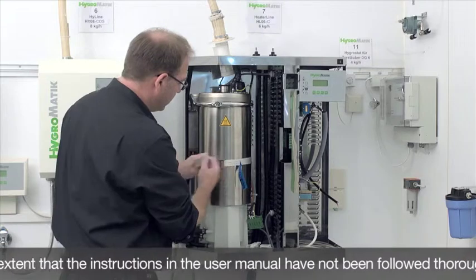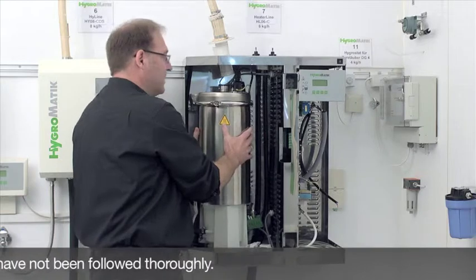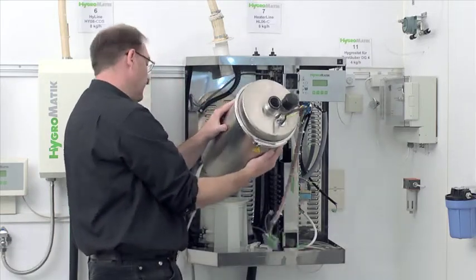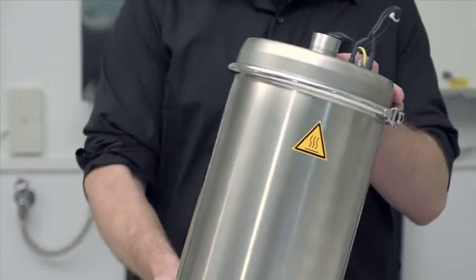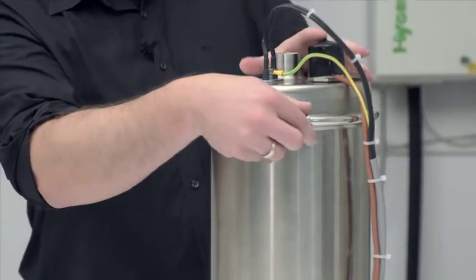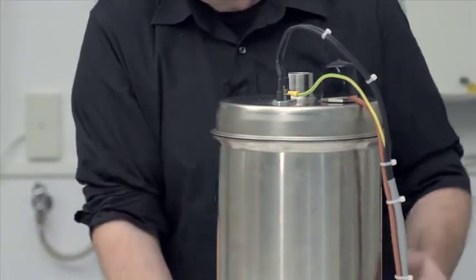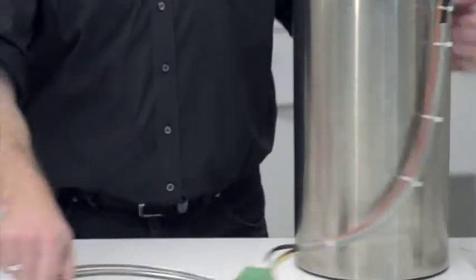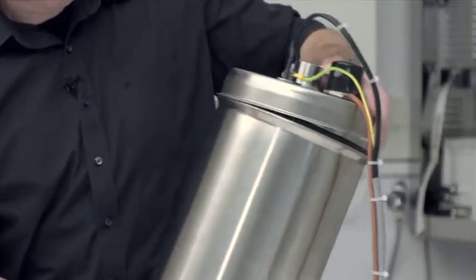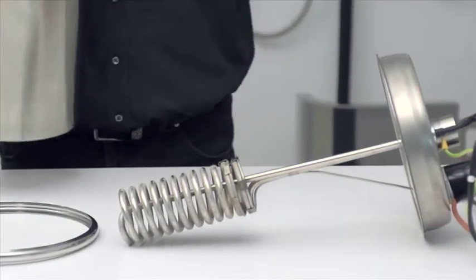Next I unfasten the cylinder clamping belt and now I am actually ready to lift the cylinder out carefully. For cylinder maintenance we open the cylinder on top at the clamping ring. Then we can pull up the cylinder top and have the heating element out as well which is connected to the cylinder top.